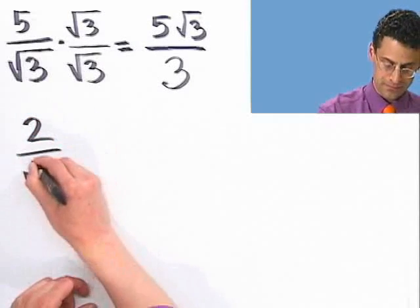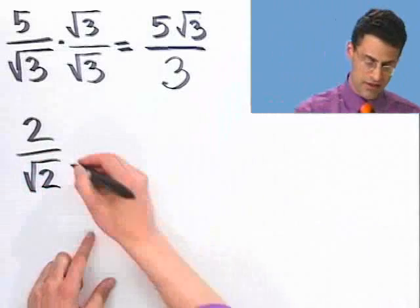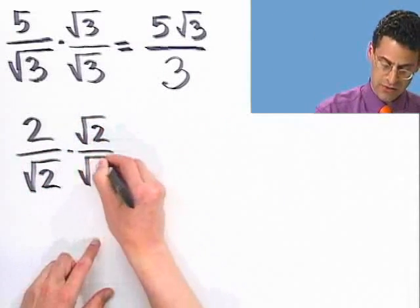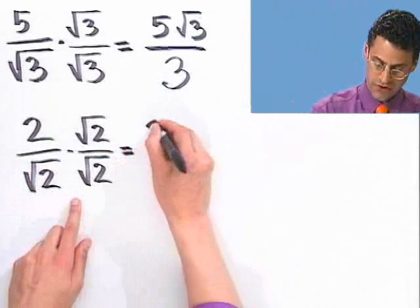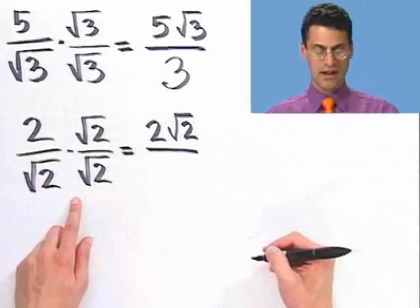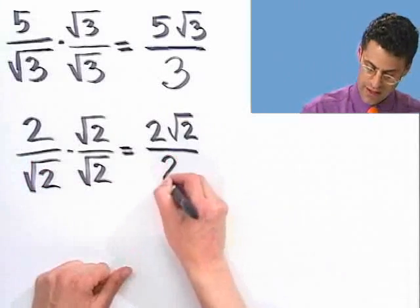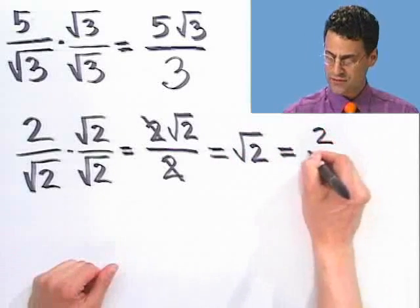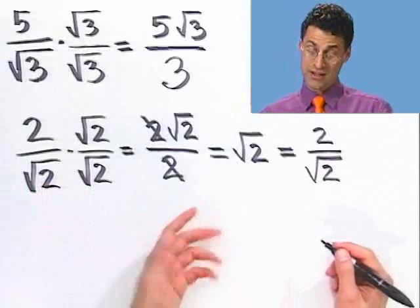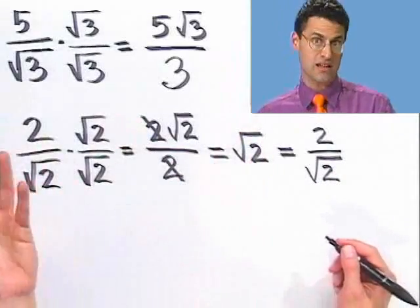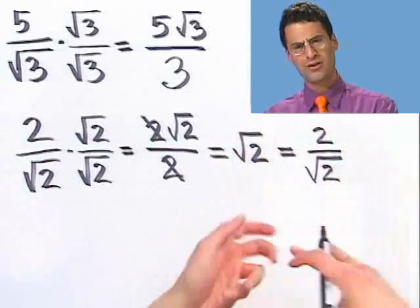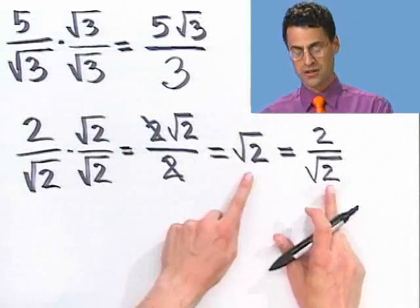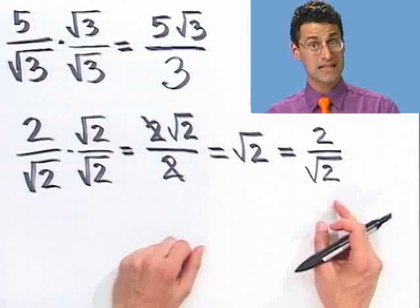The method is: if it's something simple like this, you just multiply top and bottom by one, and the choice of one is straightforward — it's just the square root. For example, if I have two over the square root of two, I multiply top and bottom by square root of two over square root of two. On the bottom, square root of two times square root of two is just two, and these cancel, leaving the square root of two. So the square root of two is the same as two divided by the square root of two. The cleaner form is nicer, and this is why rationalizing the denominator is not necessarily a bad idea.